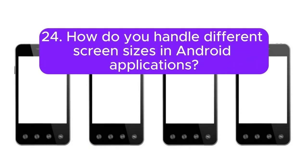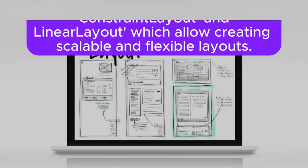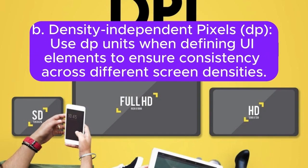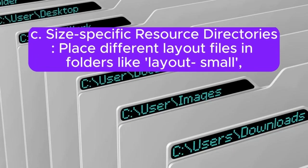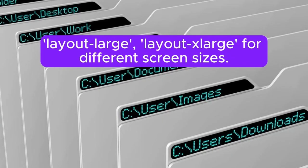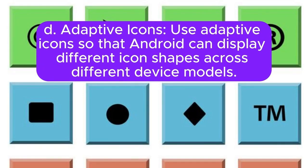Question 24: How do you handle different screen sizes in Android applications? Strategies include: using responsive layouts with ConstraintLayout and LinearLayout to create scalable and flexible layouts; using density-independent pixels (dp) when defining UI elements to ensure consistency across different screen densities; placing different layout files in size-specific resource directories like layout-small and layout-large; and using adaptive icons so Android can display different icon shapes across different device models.